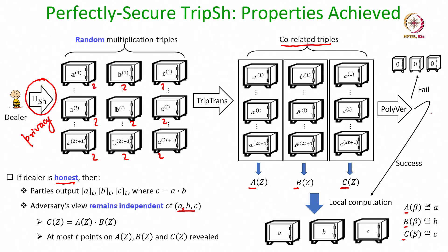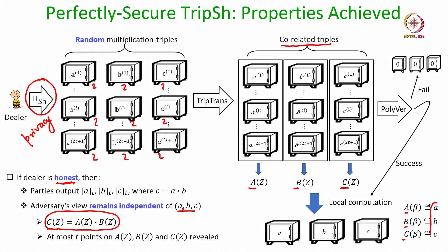There is at least one triplet among the correlated triplets which is not known to the adversary at the end of the polynomial verification process. As a result, the value of the A, B and C polynomials at beta is also randomly distributed for the adversary — for every candidate unknown triplet, there is a corresponding (A, B, C) triplet consistent with the adversary's view. This triplet (A, B, C) will be a multiplication triplet because it constitutes distinct points on the A, B and C polynomials, and for an honest dealer the C polynomial is the product of the A and B polynomials.